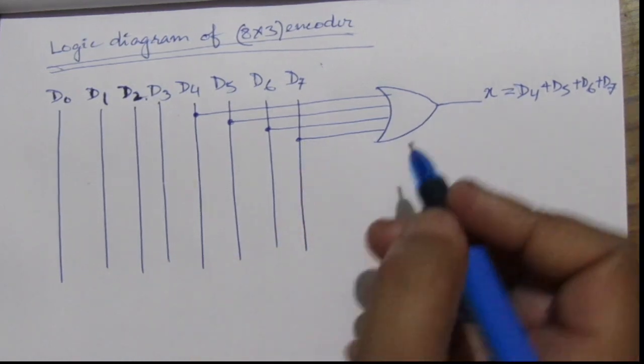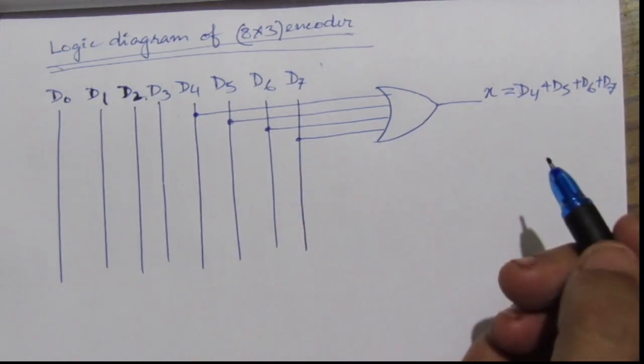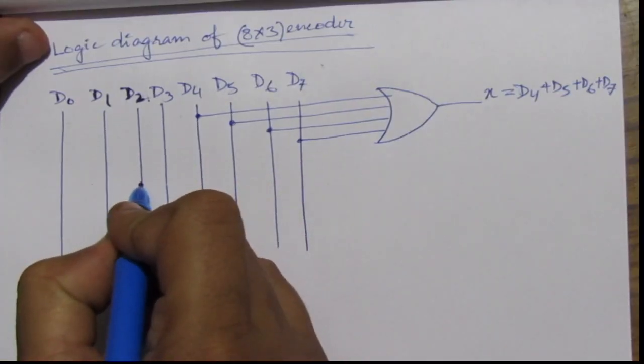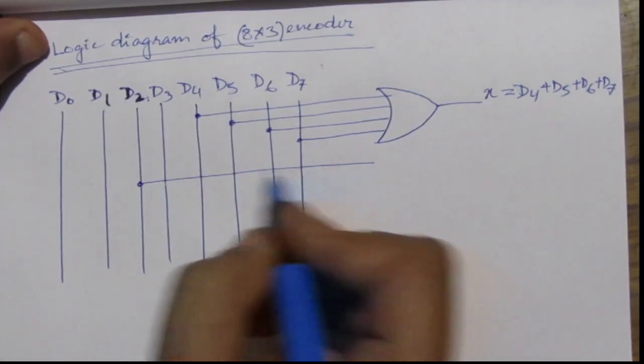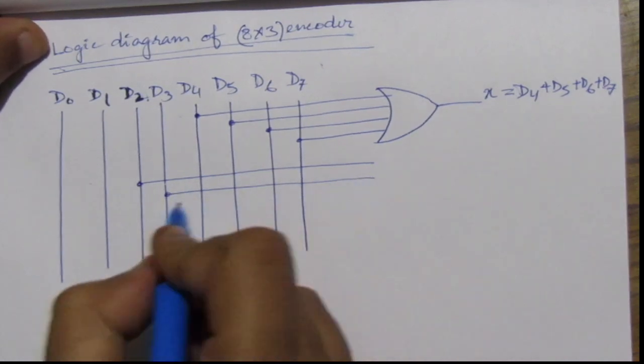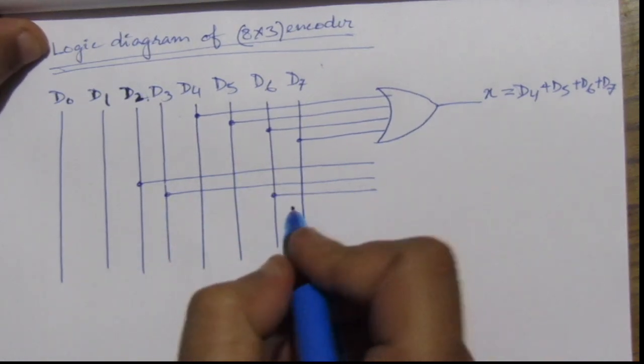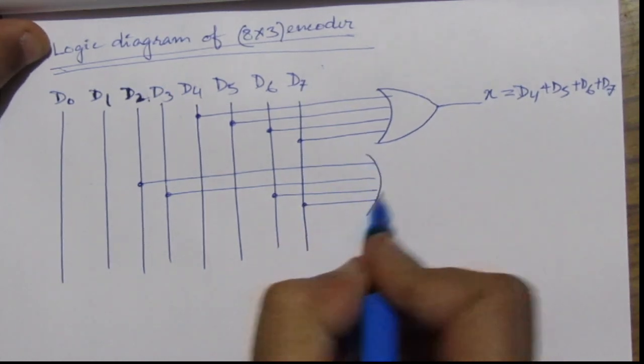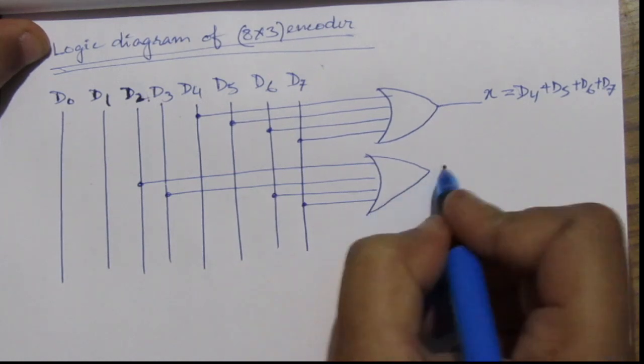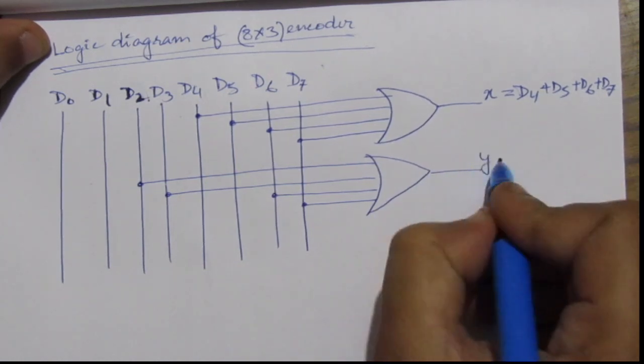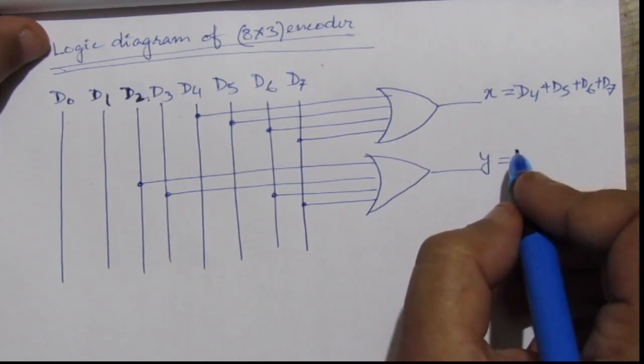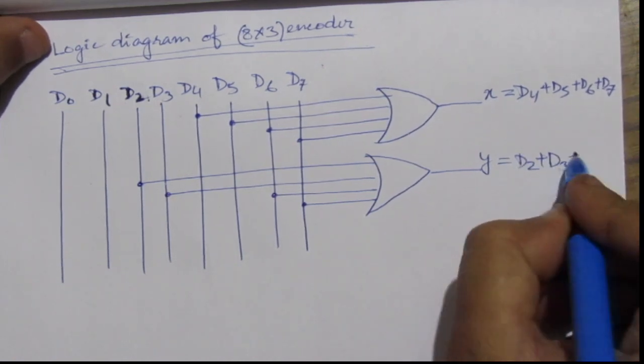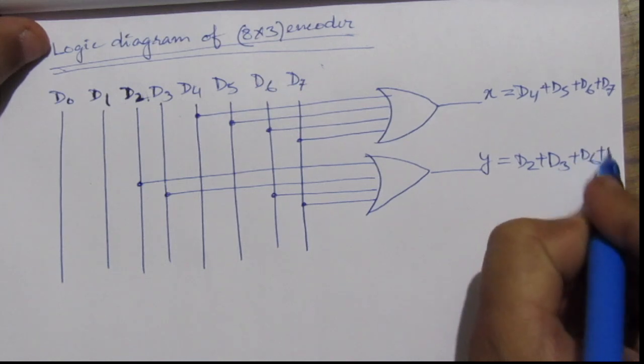And similarly for the y, we have d2, d3, d6 and d7. d2 plus d3 plus d6 plus d7.